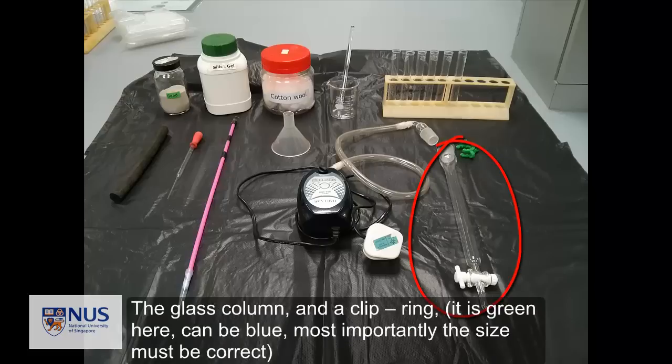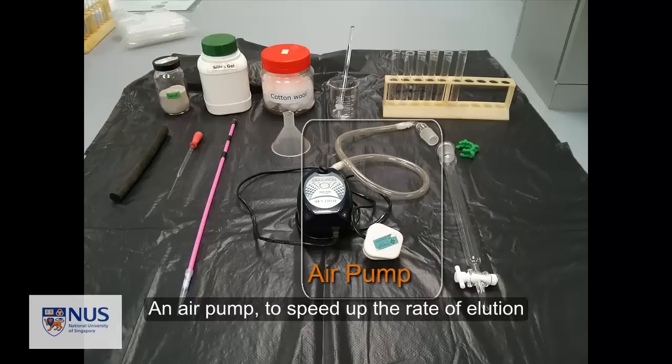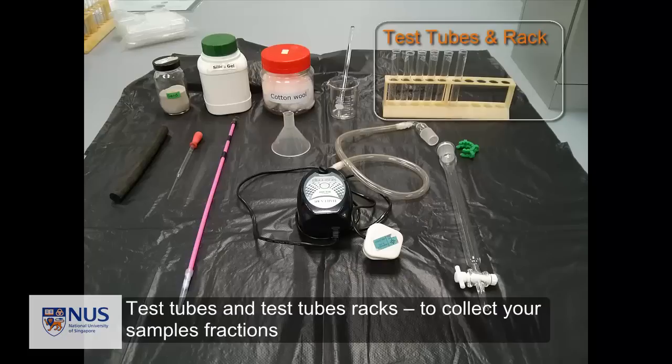The glass column and a clip ring—it is green here, it can also be blue, but most importantly the size must be correct. An air pump to speed up the rate of elution. Test tubes and test tube racks to collect your sample fractions.